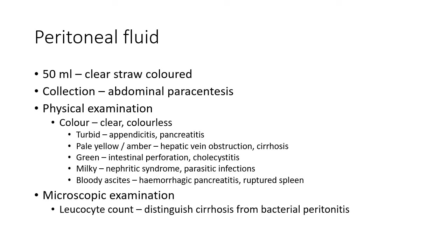Normally, the peritoneal cavity contains 50 ml of peritoneal fluid, which is clear and straw-colored. Collection in cases of ascites is called abdominal paracentesis, indicated in ascites of unknown etiology, postoperative hypertension, and acute abdominal pain of unknown etiology. Normal color is clear and colorless; it can be turbid in appendicitis or pancreatitis; pale yellow or amber in hepatic vein obstruction and cirrhosis; green in intestinal perforation; milky in nephrotic syndrome; and bloody in hemorrhagic pancreatitis or ruptured spleen. Leukocyte count can distinguish cirrhosis from bacterial peritonitis.